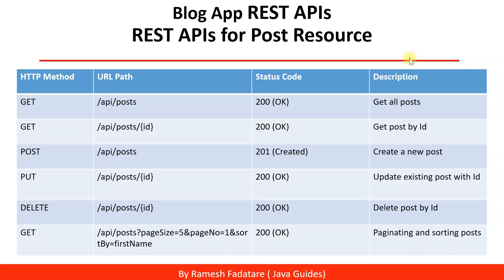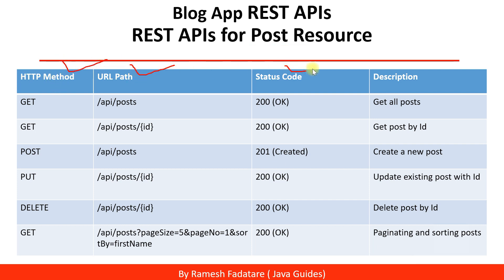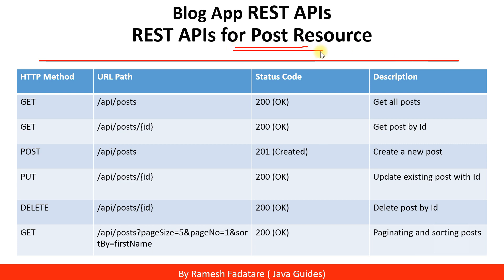Welcome back. In this video we're going to take a look at how to create a REST API design for a post resource. I have basically created a table with a few columns: HTTP method, URL path, status code, and description. We can create a few more columns like request structure, response structure, and media type, but to keep it simple I have created these four columns. I have listed all the REST APIs for the post resource, which we are going to develop in upcoming videos, and this REST API design will help us whenever we develop those REST APIs.